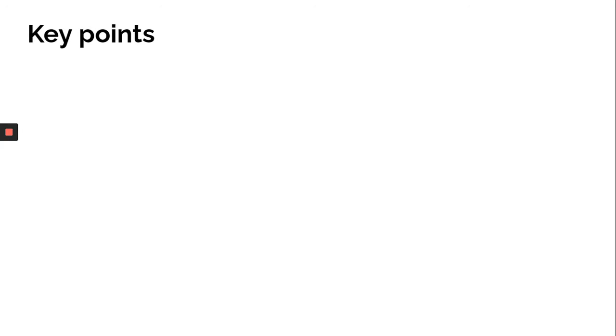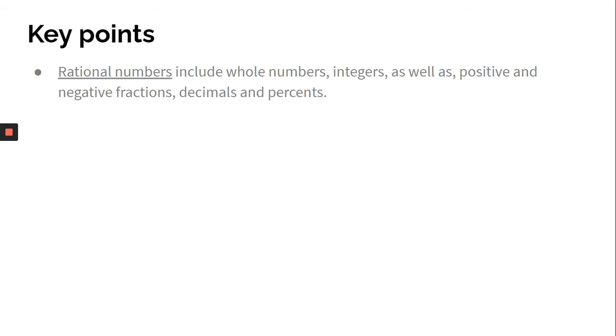Some key points to think about. Rational numbers include whole numbers, integers, as well as positive and negative fractions, decimals, and percents.